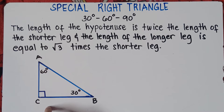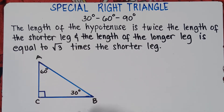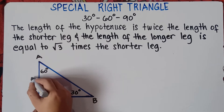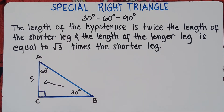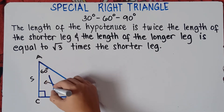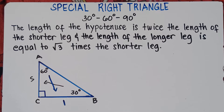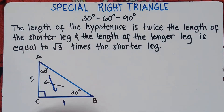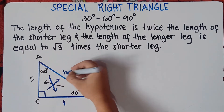We call this a right triangle if one angle measures exactly 90 degrees, and that would be angle C. To identify the shorter leg, that would be the opposite of the 30-degree angle. The opposite side of the 60-degree angle would be your longer leg. And the hypotenuse is the longest side, opposite of the 90-degree angle.